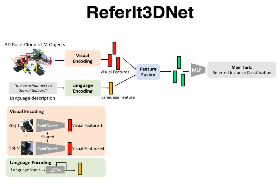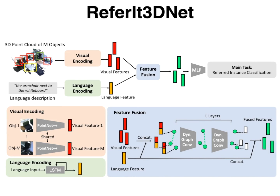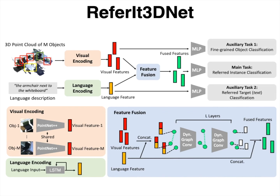In our proposed architecture, we combine language with vision differently. Specifically, after we extract the visual features of each object and a linguistic feature for the utterance, we fuse them via a dynamic graph neural network that takes as input their concatenated representations and explicitly encodes pairwise object interactions among objects that are nearby in a latent space. The final fused representations are passed to a shallow MLP that predicts the target. We also use two auxiliary classification losses that guide the visual and linguistic representations to solve the tasks shown in our simplest baseline.